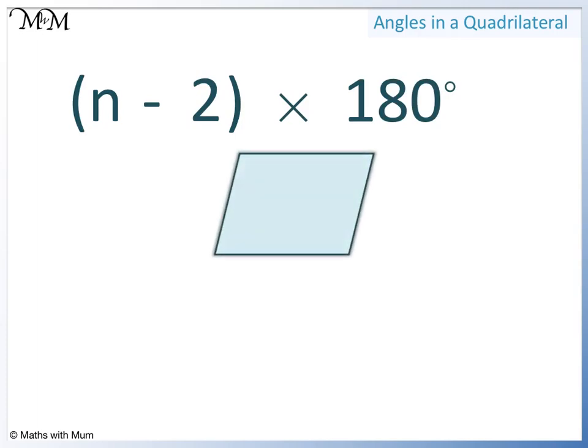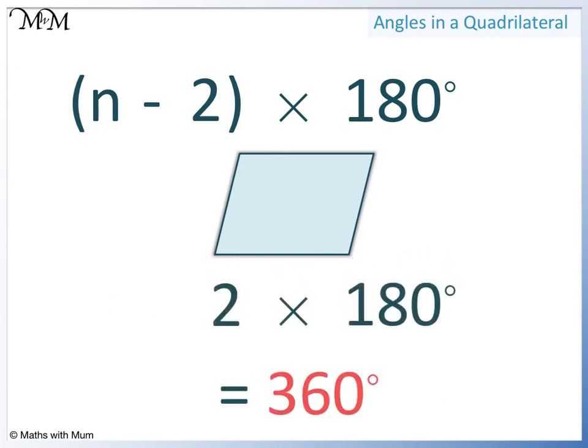For a quadrilateral, the number of sides is 4. We subtract 2 and then multiply by 180 degrees. 4 take away 2 equals 2, 2 times 180 equals 360. So the sum of the interior angles in any 4 sided shape is 360 degrees.